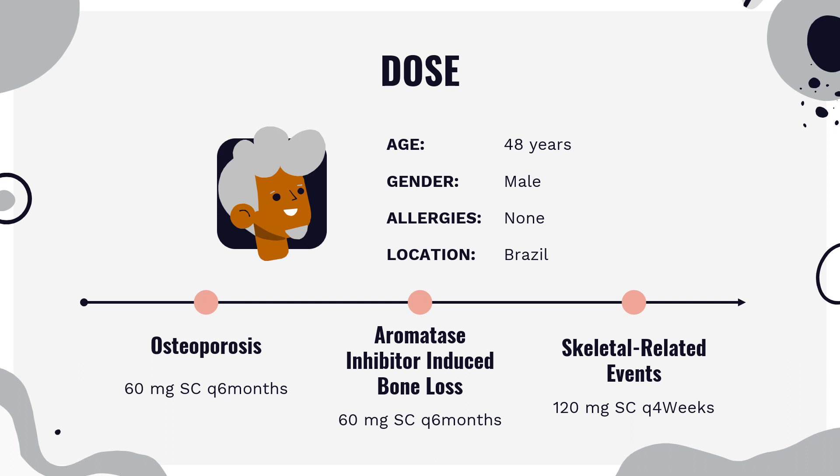Androgen deprivation-induced bone loss (Prolia only): Indicated to increase bone mass in men at high risk for fracture receiving androgen deprivation therapy for non-metastatic prostate cancer. Dose: 60 mg SC every 6 months. Glucocorticoid-induced osteoporosis (Prolia only): Indicated for men and women at high risk of fracture who are either initiating or continuing systemic corticosteroids equivalent to ≥7.5 mg/day of prednisone and are expected to remain on glucocorticoids for at least 6 months. Dose: 60 mg SC every 6 months.